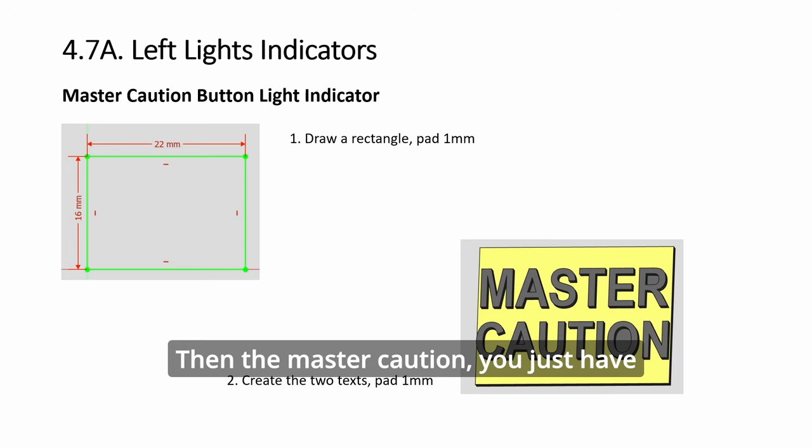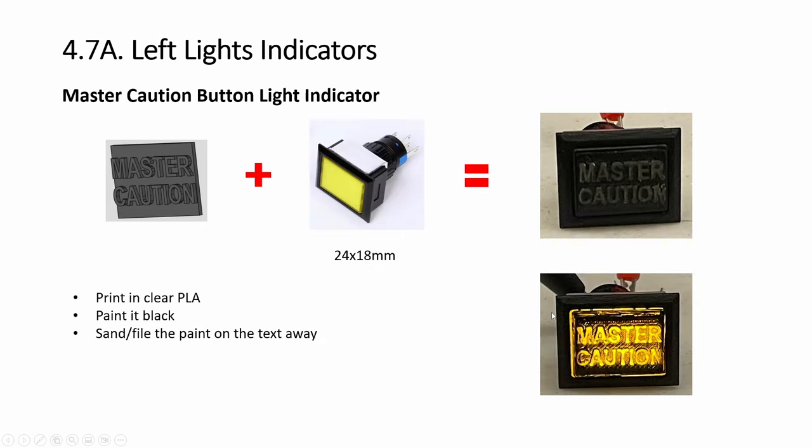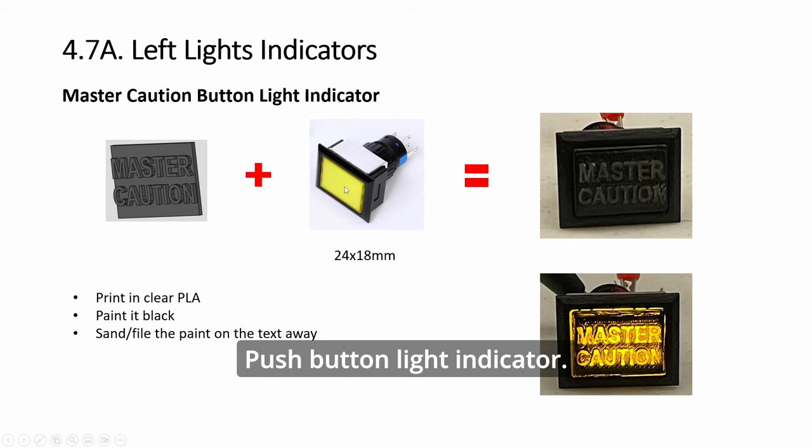For the master caution, you have this flat rectangle padded and then add the text. Choose a font size that you can squeeze in the most. This push button light indicator is the only place where you need a button function - everything else is just light. This has to be inside slightly so the whole thing can go in a bit. There will be some light bleed.